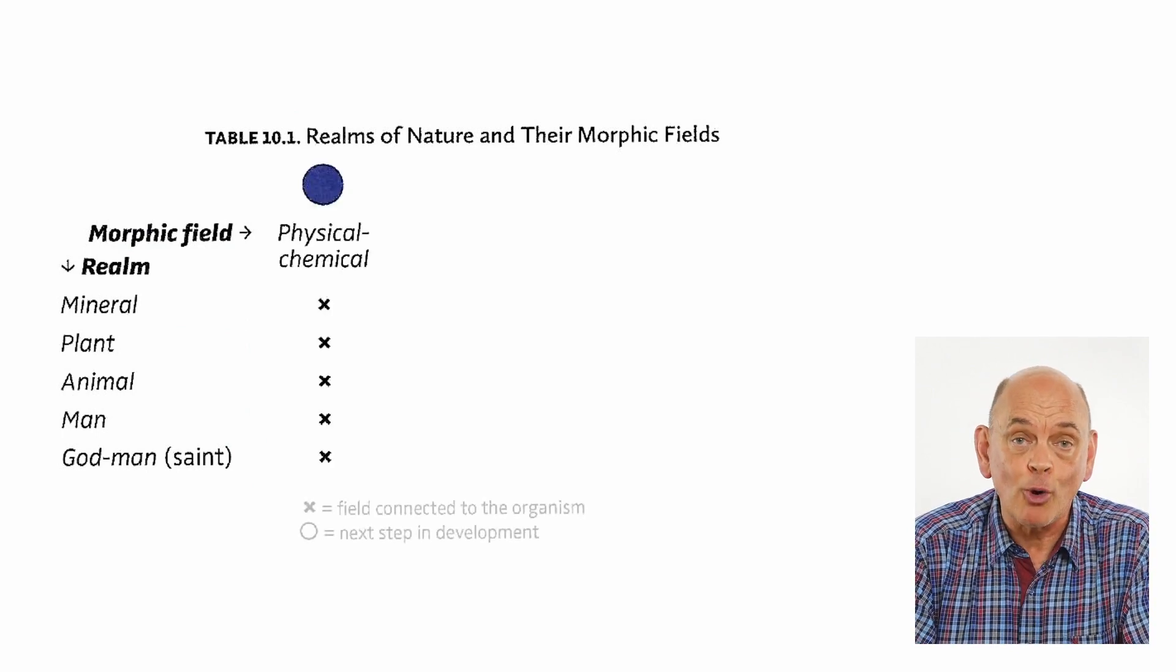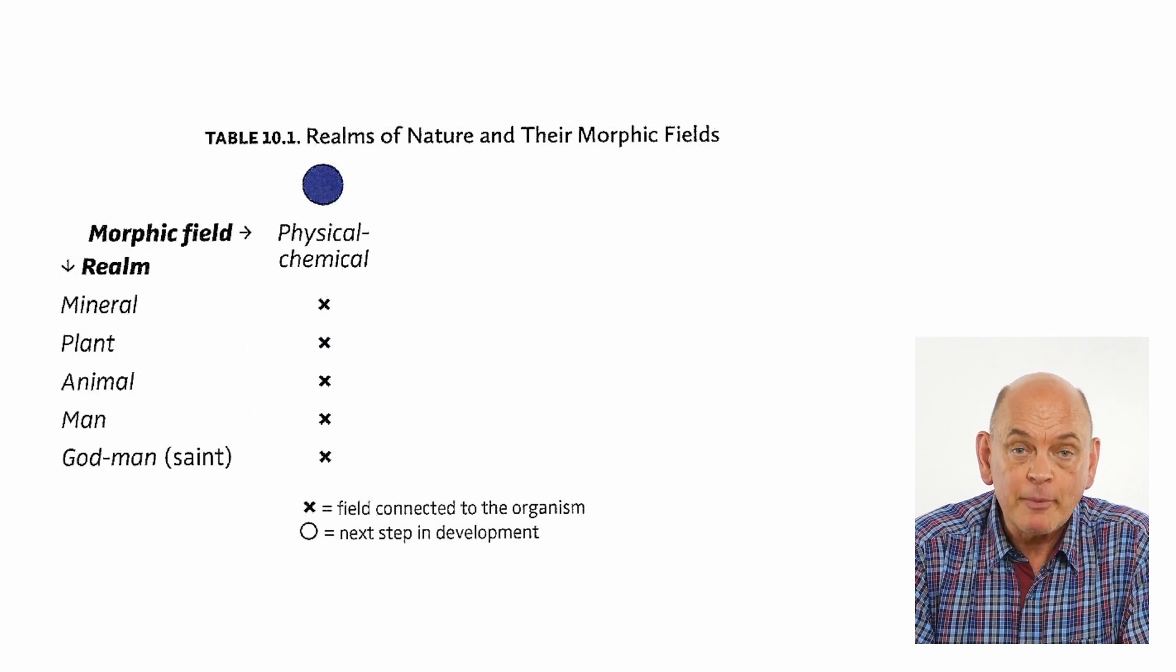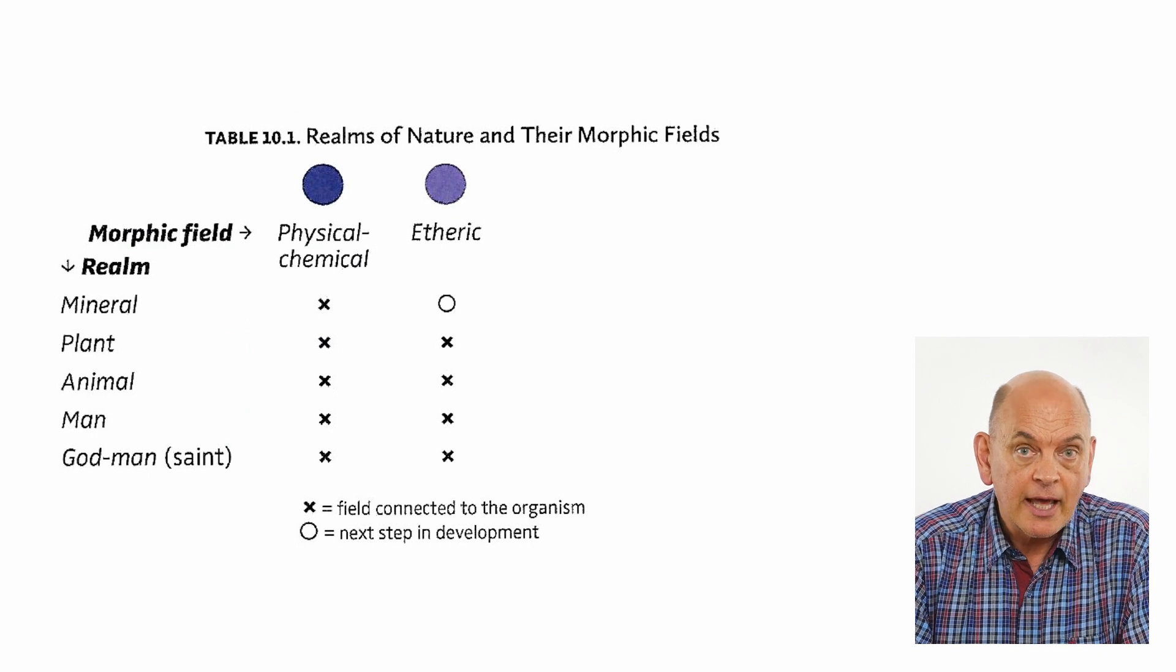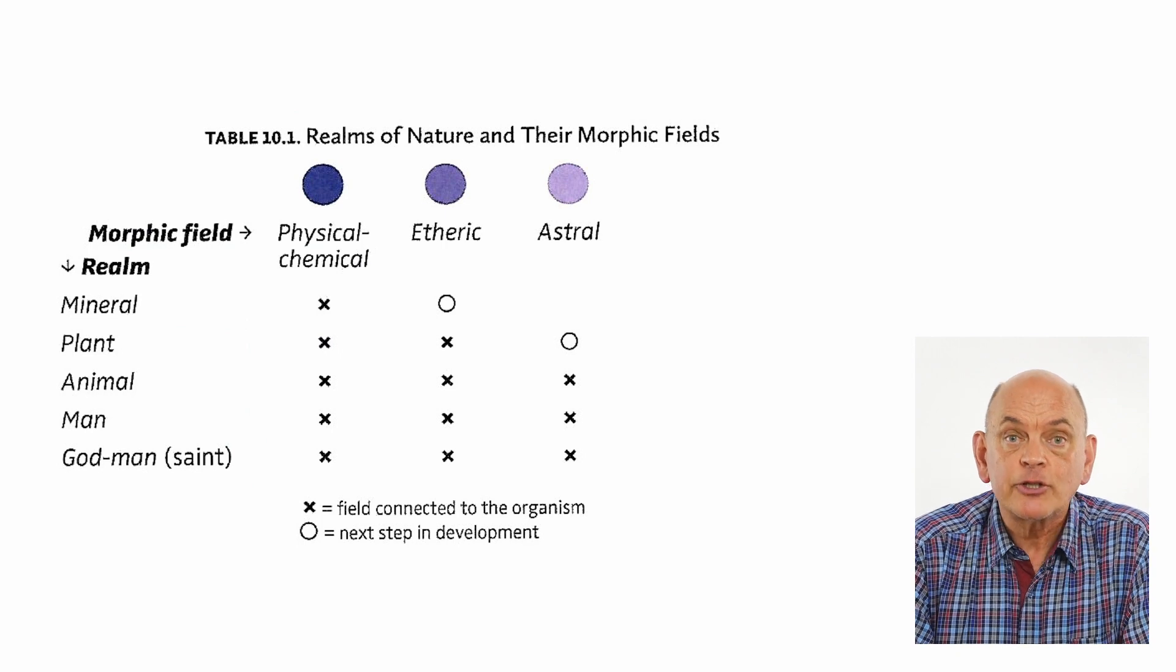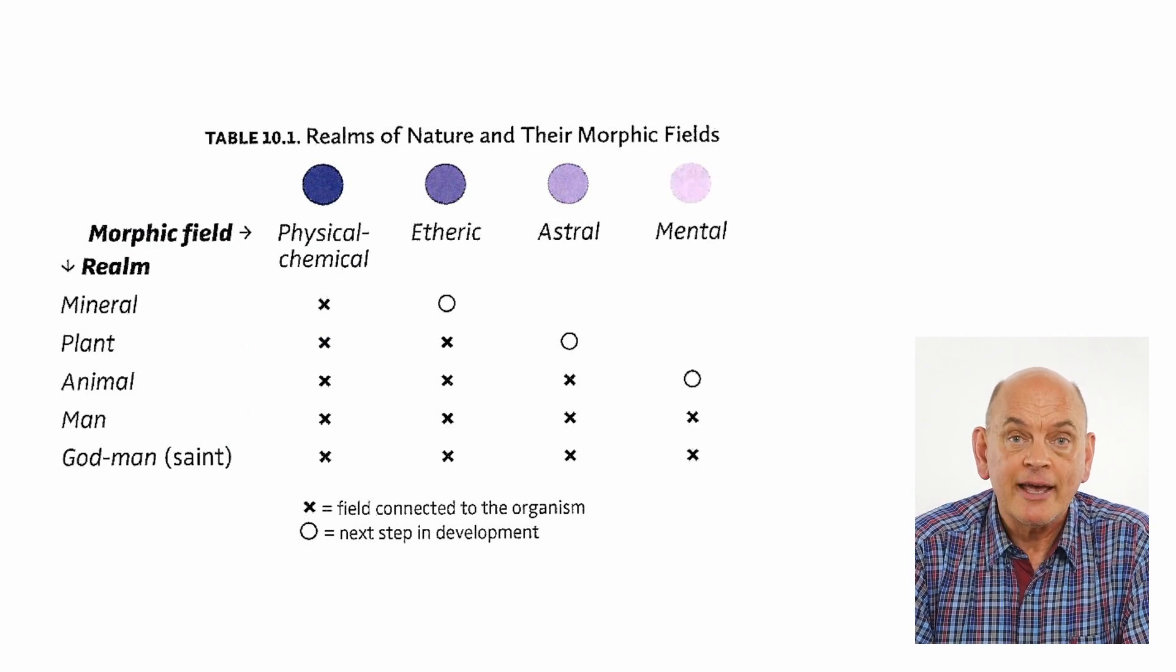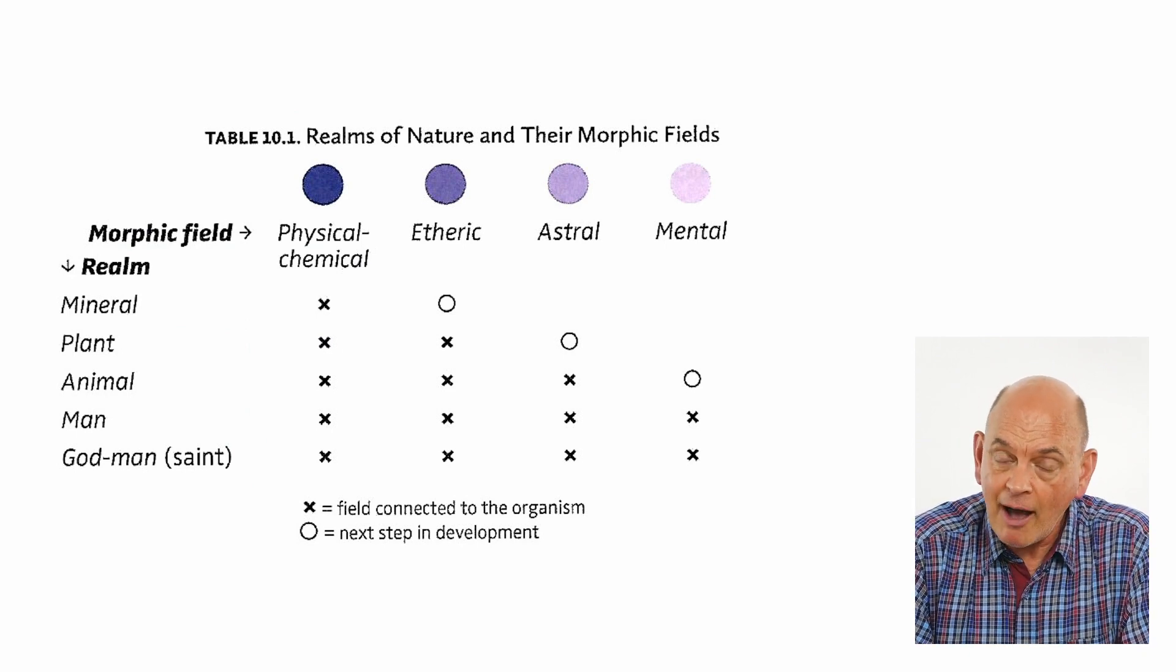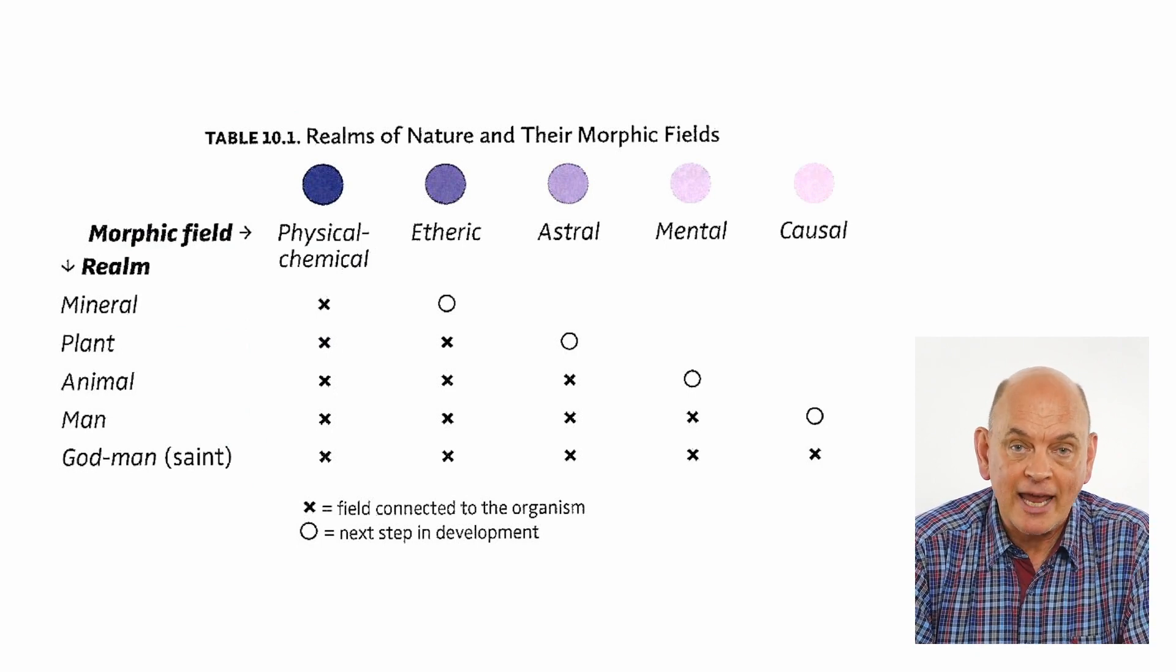Here we are in gross matter and there are already electromagnetic waves. The next step is the ether energy, the life energy. Then comes the astral energy connected with feelings. Even more subtle is the mental energy with thoughts and self-consciousness. And the most subtle energy is the causal or divine energy connecting you with the divine.